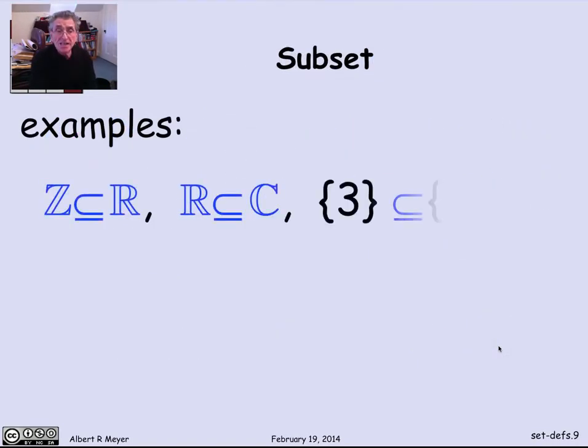So some examples of the subset relation are that the integers are a kind of an integer is a special case of a real number. So the set of integers is a subset of the real numbers. A real number is a special case of a complex number. So the real numbers are a subset of the complex numbers. And here's a concrete example where I have a set of three things, 5, 7, and 3.